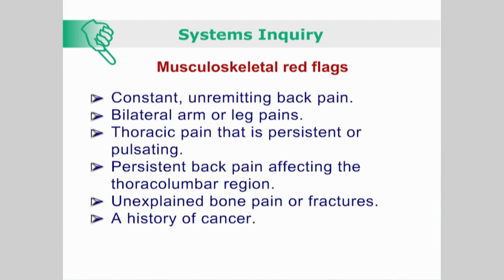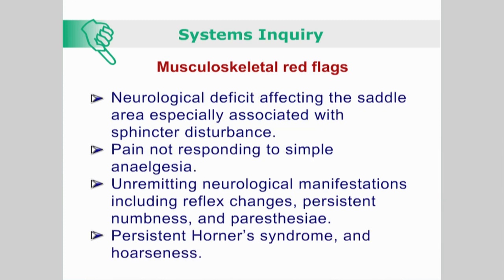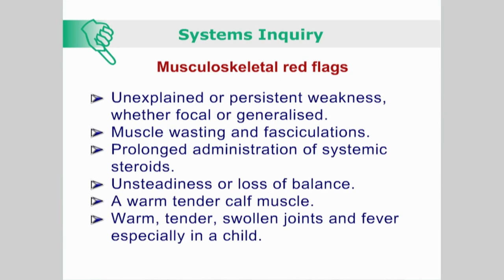Additional red flags include unexplained bone pains or fractures; history of cancer; neurological deficit affecting the saddle area, especially associated with sphincter disturbance; pain not responding to simple analgesia; unremitting neurological manifestations including reflex changes, persistent numbness, and paresthesia; persistent Horner's syndrome and hoarseness; unexplained or persistent weakness, whether focal or generalized; muscle wasting and fasciculations; prolonged administration of systemic steroids; unsteadiness or loss of balance; a warm, tender calf muscle; and warm, tender, swollen joints with fever, especially in a child.